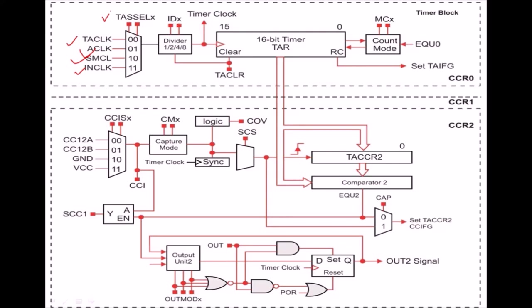Two bits are available in the timer control register, used to select the proper clock division. After this divider block, the selected clock is given to the timer block, and the timer operates on this selected clock signal. This is the TAR register, generally initialized with 0x00 initially. After each clock cycle, the count of this timer register will be incremented by 1. As per the delay, the user will calculate a count, and that count will be stored in the capture-compare register. There are three different models of capture-compare available: CCR0, CCR1, and CCR2.